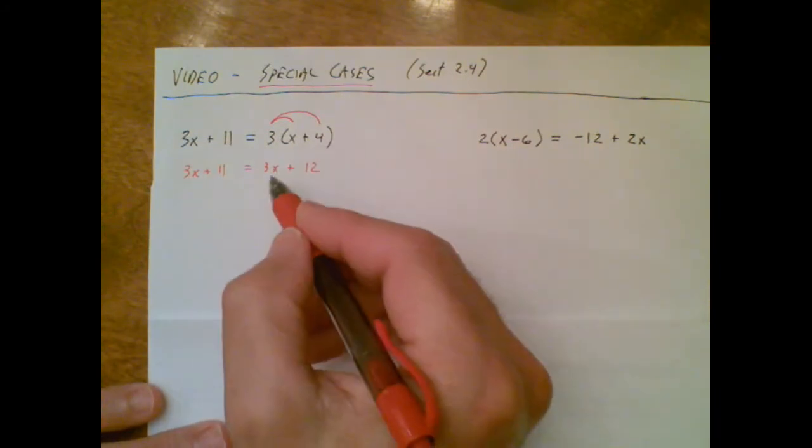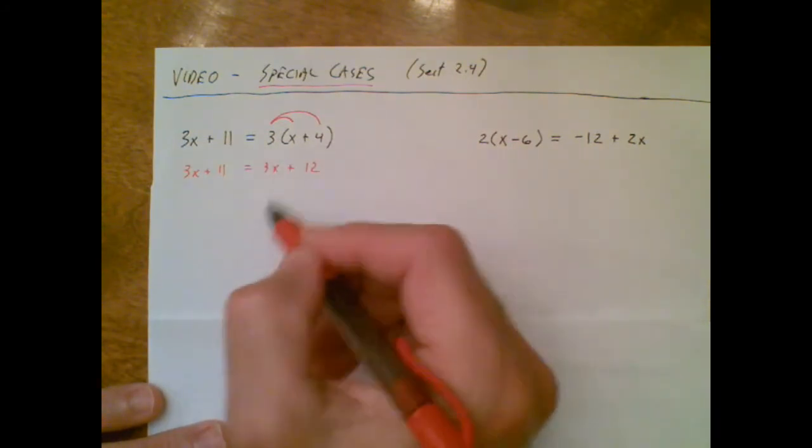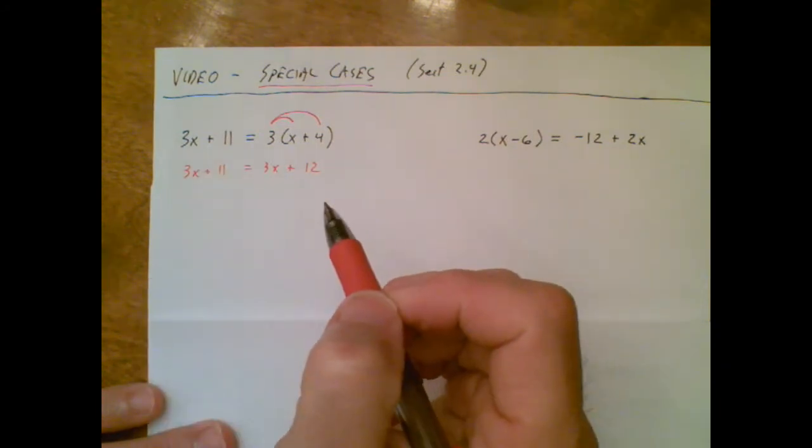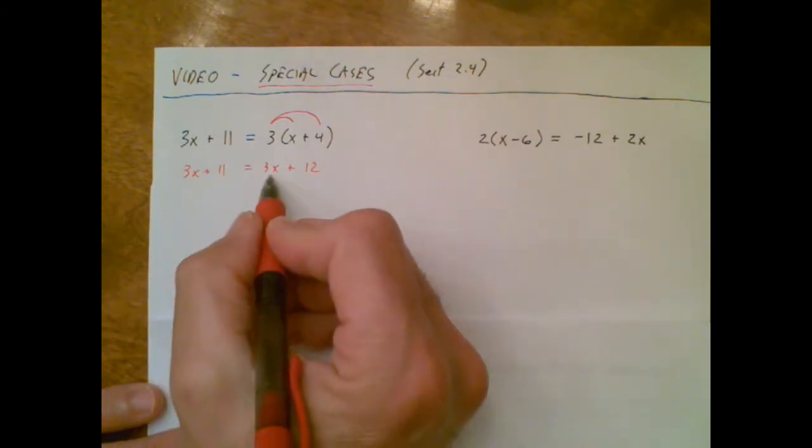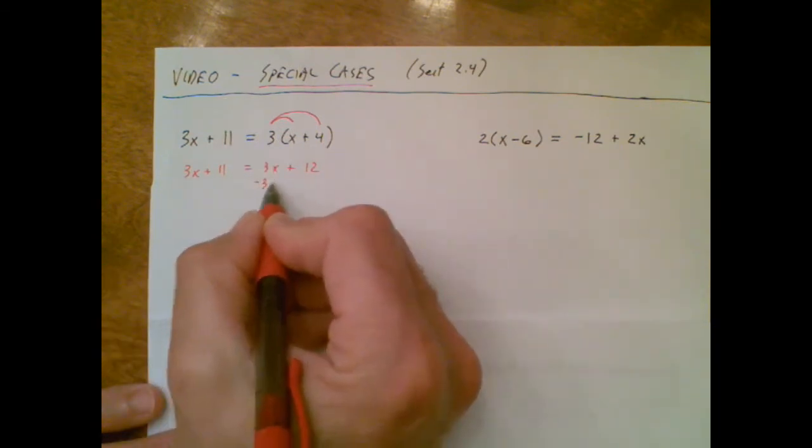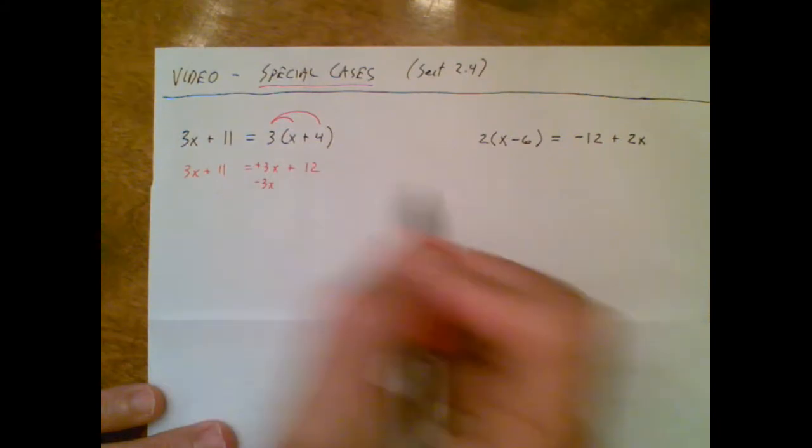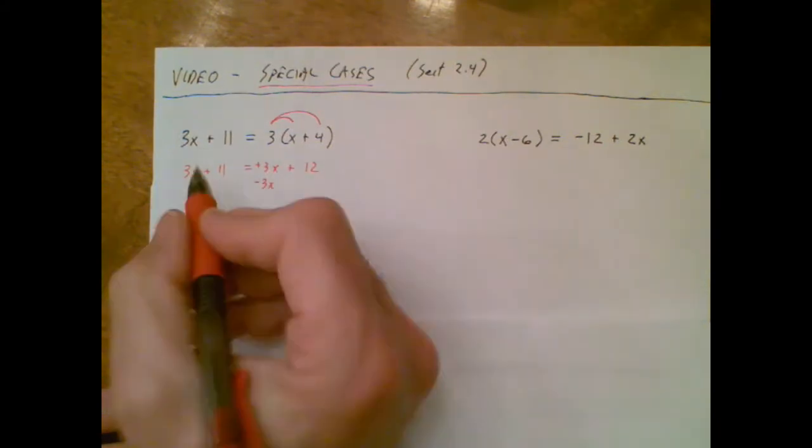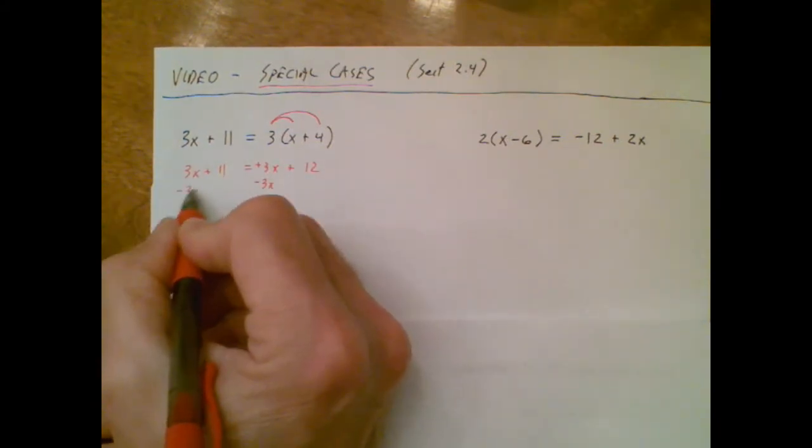Now I need to go ahead and say I have some X's living on the right side, I have some X's living on the left side. I need to move one of them. I'll move this guy over there. There's an implied positive out in front, so I do a minus 3x, which means I should do a minus 3x over here as well.